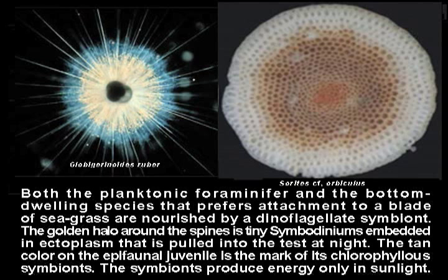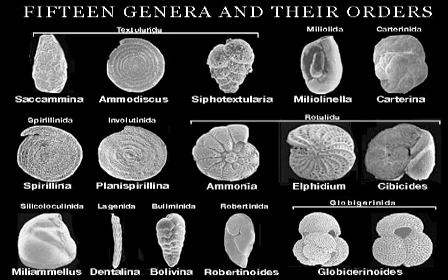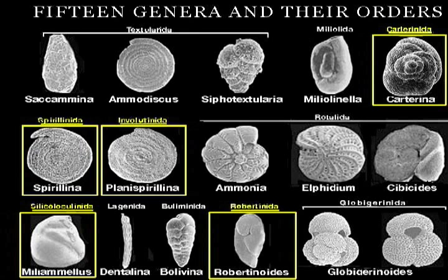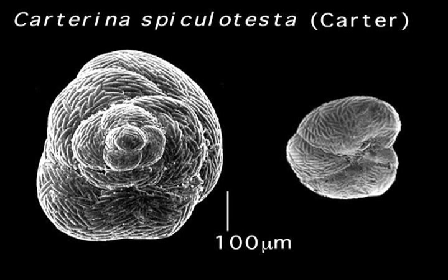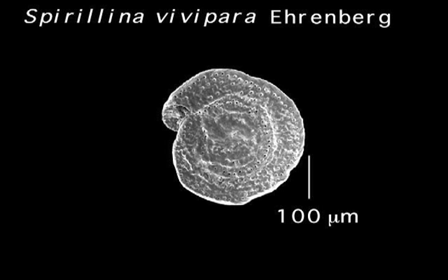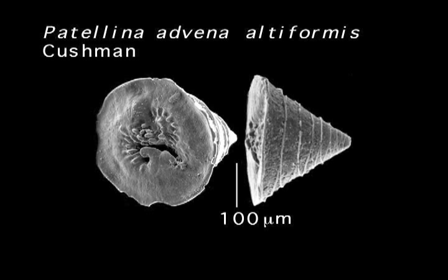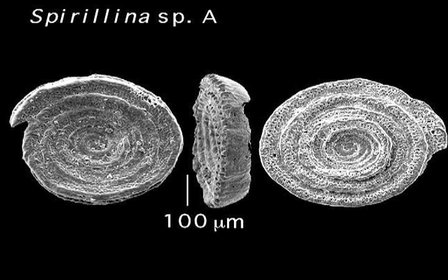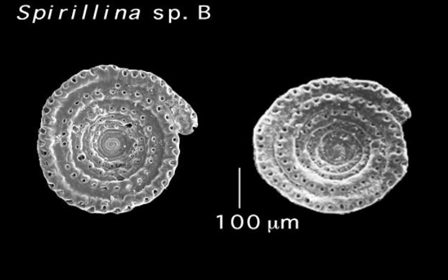These scanning electron images of some 15 genera include out-of-the-ordinary genera that represent five orders which differ in test composition or construction from those of what might be termed the more successful orders. In the Carterinida, a trochospiral rotaliid test consists of secreted calcite spicules in calcite cement — a unique combination of structural elements. In the Spirulinida, the test is a tube coiled either planospirally or as a low trochoid, but formed by only one or at most several crystals of low-magnesium calcite — also a unique construction.